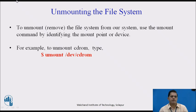After mounting a particular file system in Unix, when our work is finished, we use the unmount command. To unmount or remove the file system from your system, use the umount command by identifying the mount point or device. For example, to unmount the CD-ROM that we just mounted, use the following command: 'umount /dev/cdrom'. The mount command enables you to access your file system, but on most modern Unix systems, the automount function makes this process invisible to the user and requires no intervention.